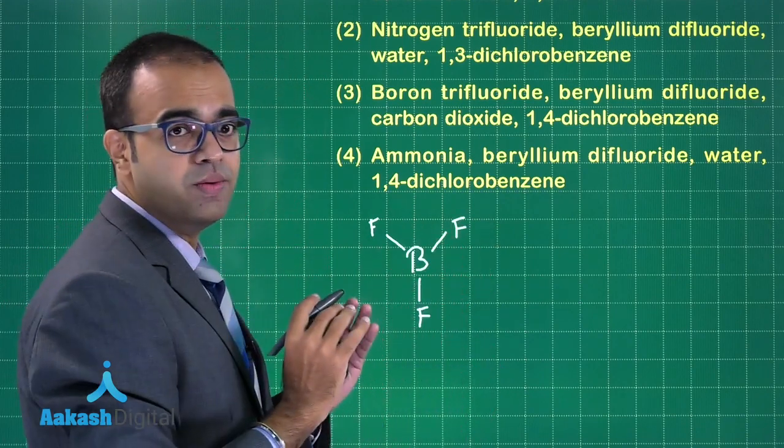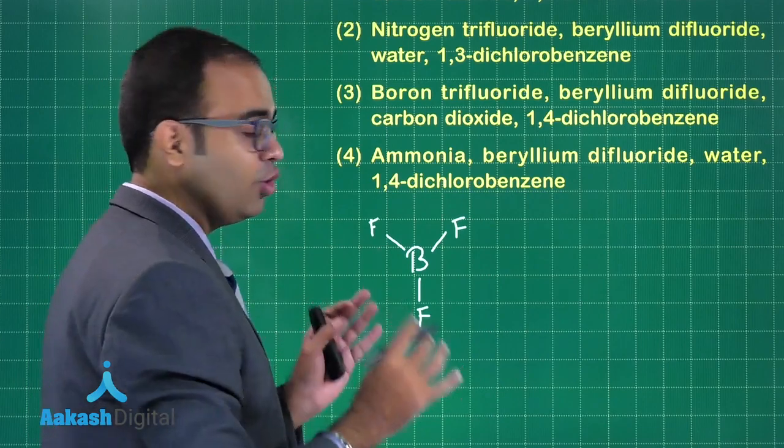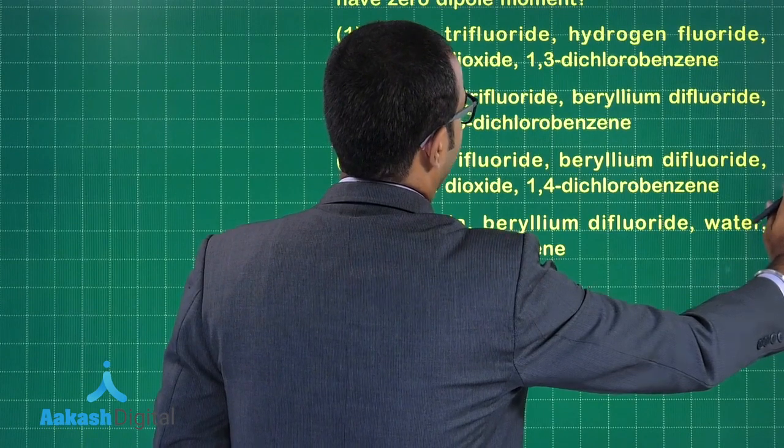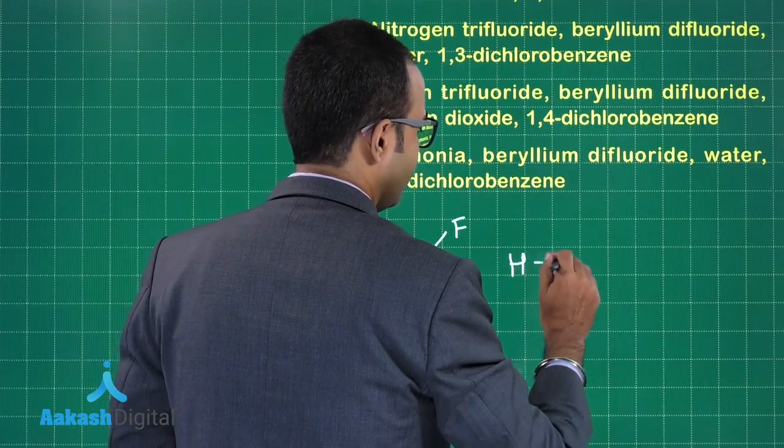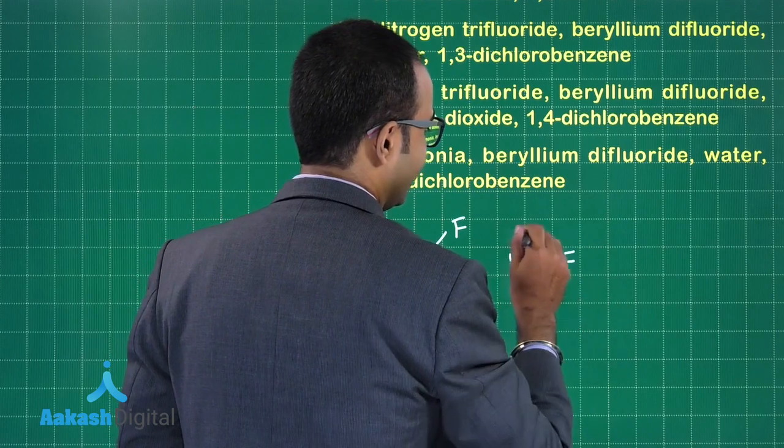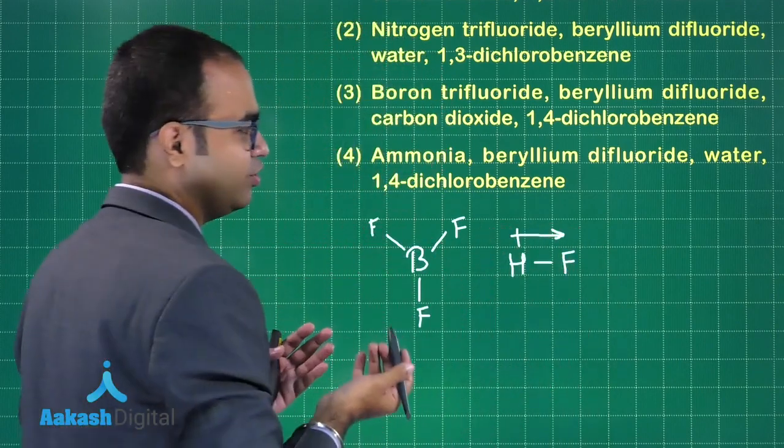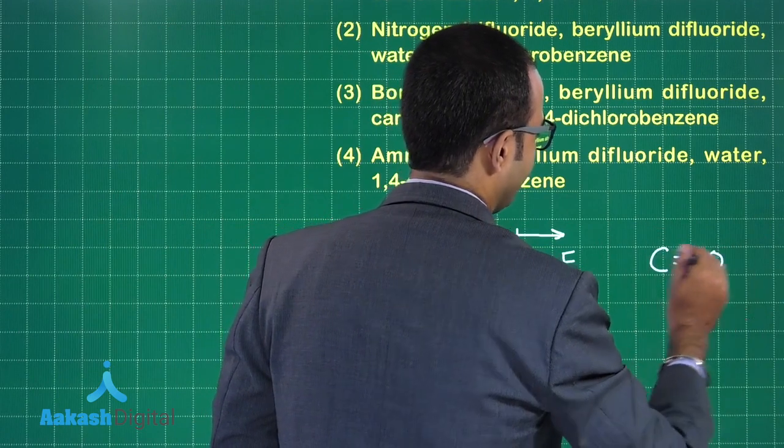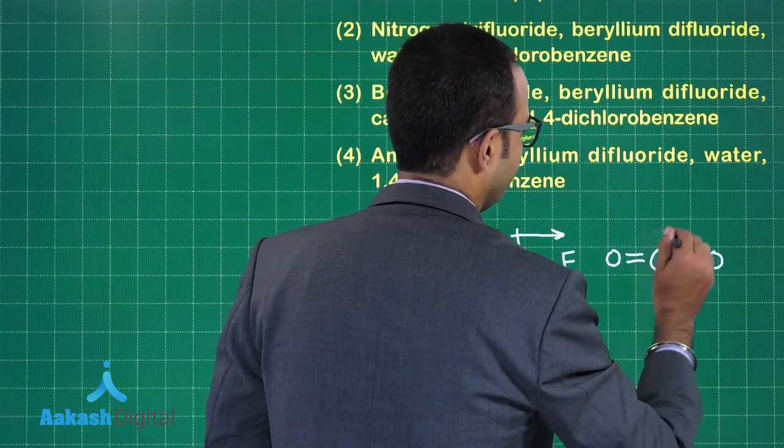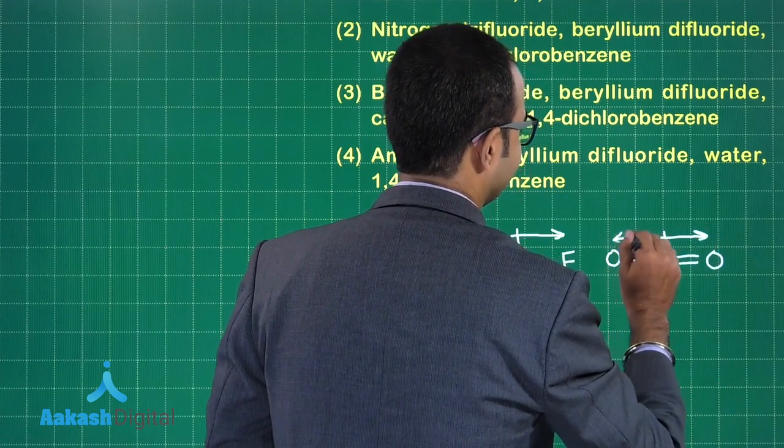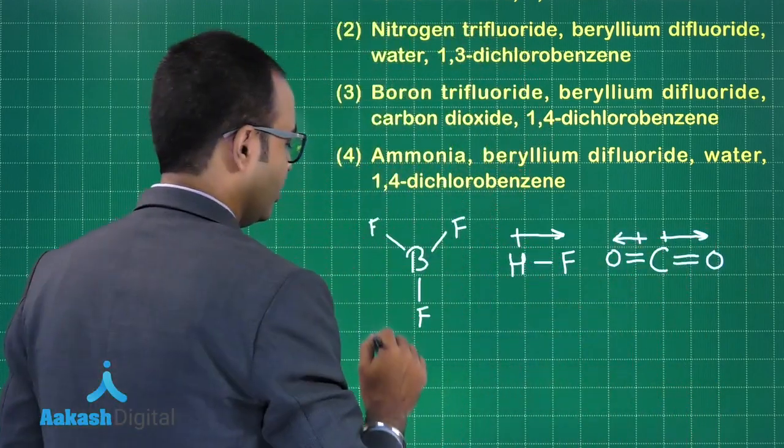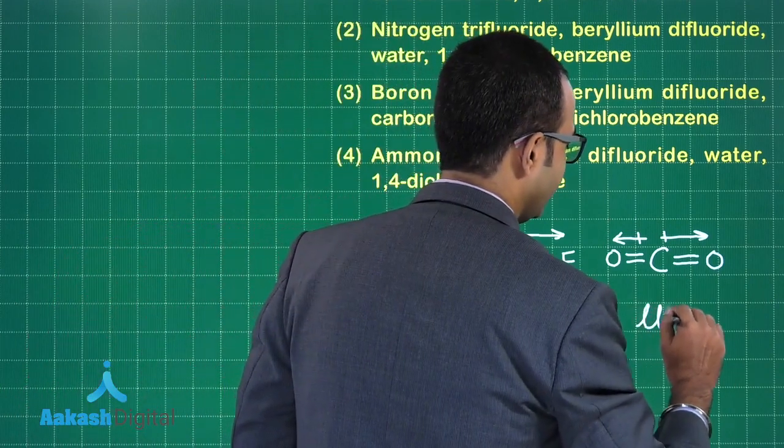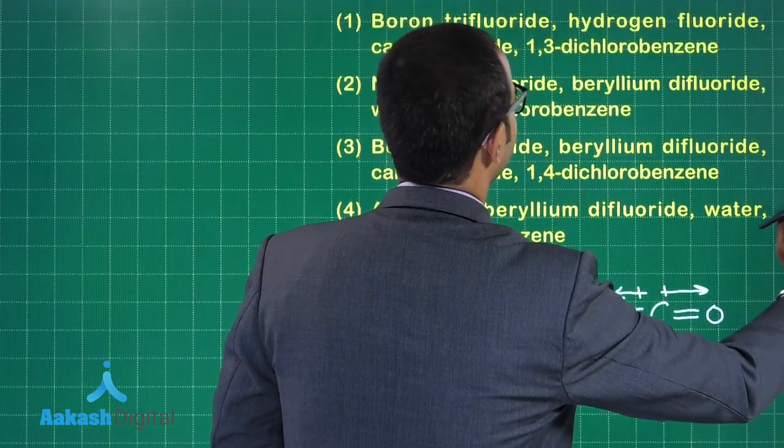Next one is HF. HF will be what? HF is a polar molecule, yes we know that. Third molecule is CO2, so CO2 is C double bond O double bond O. This will cancel. So for the first molecule BF3 it is zero, for CO2 it is zero.